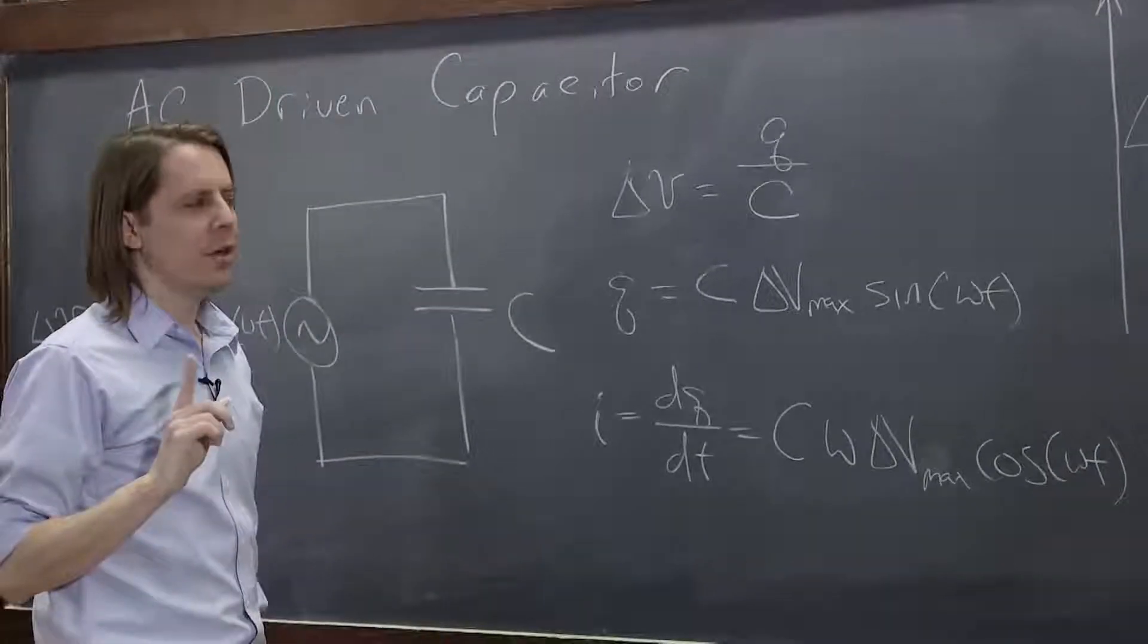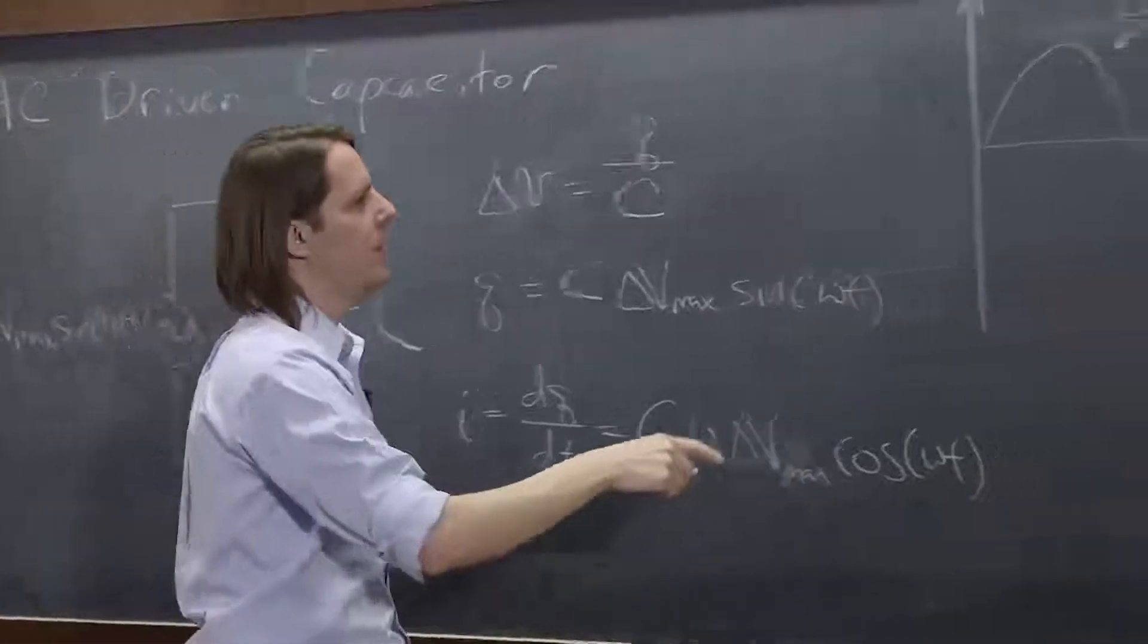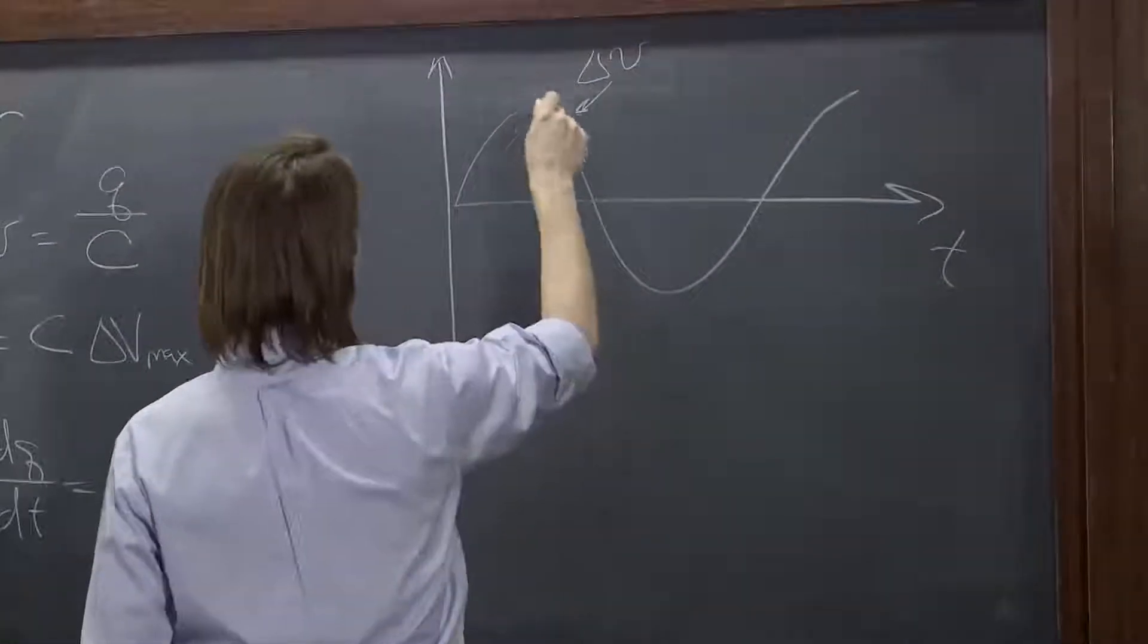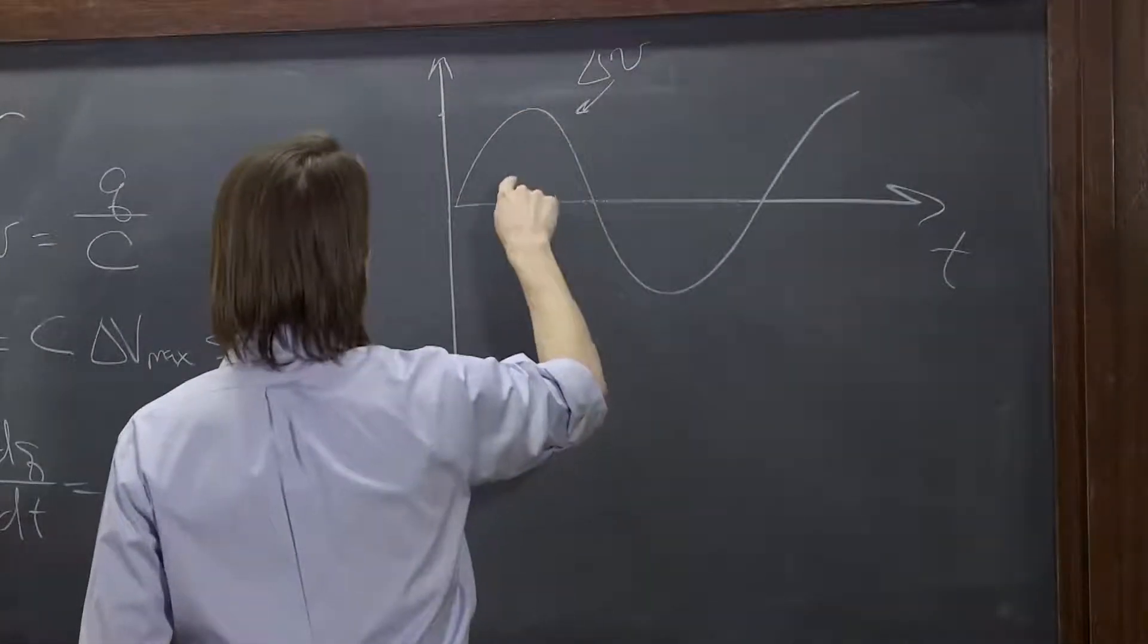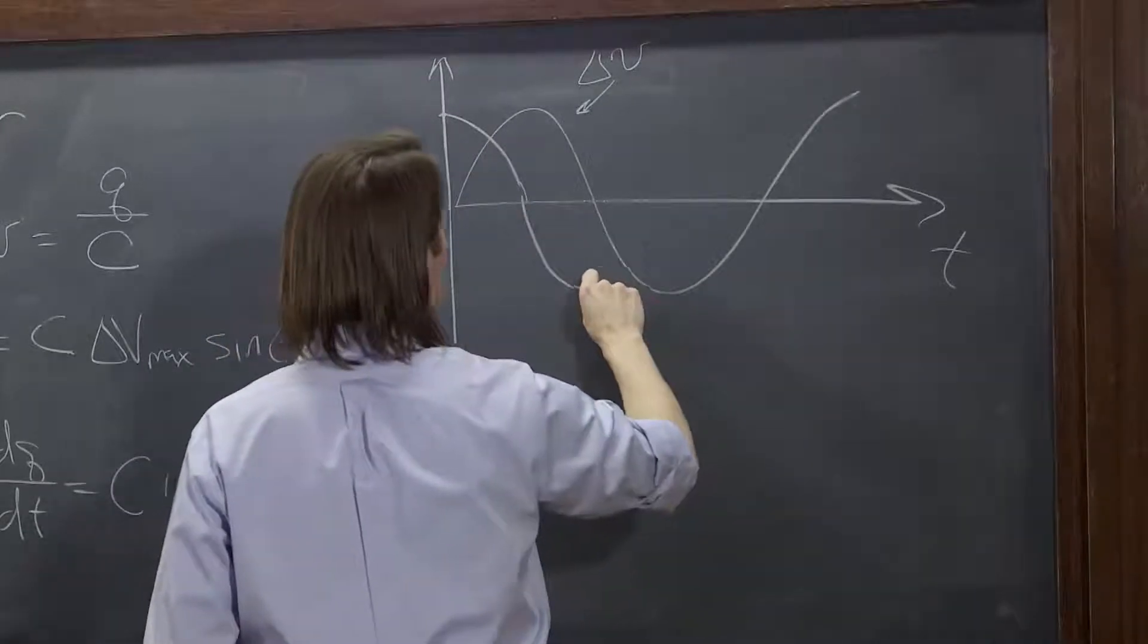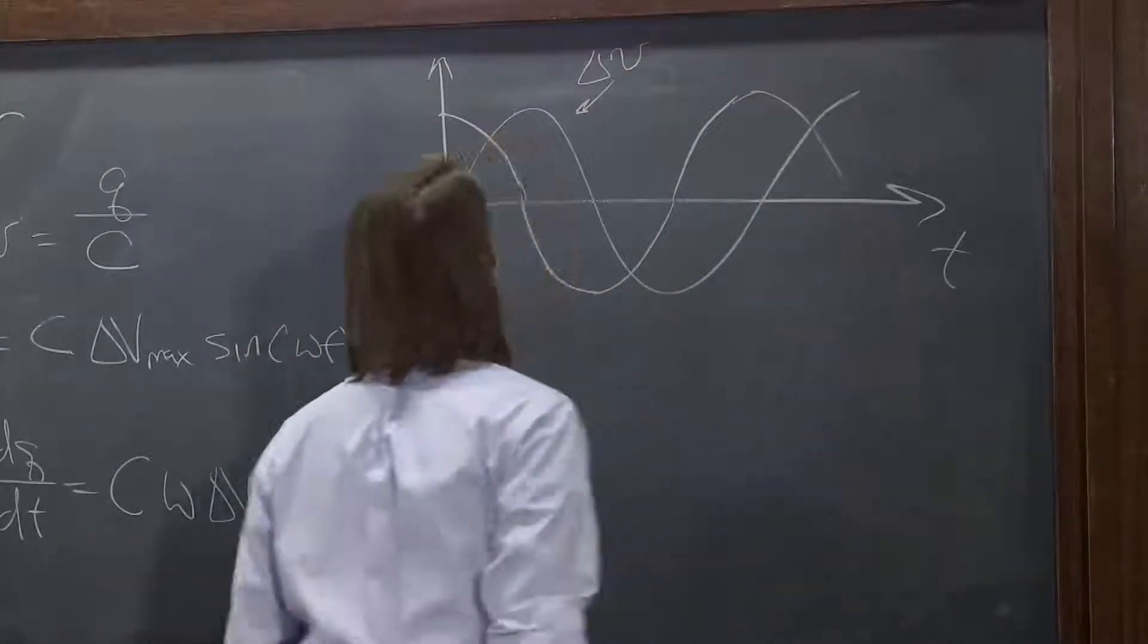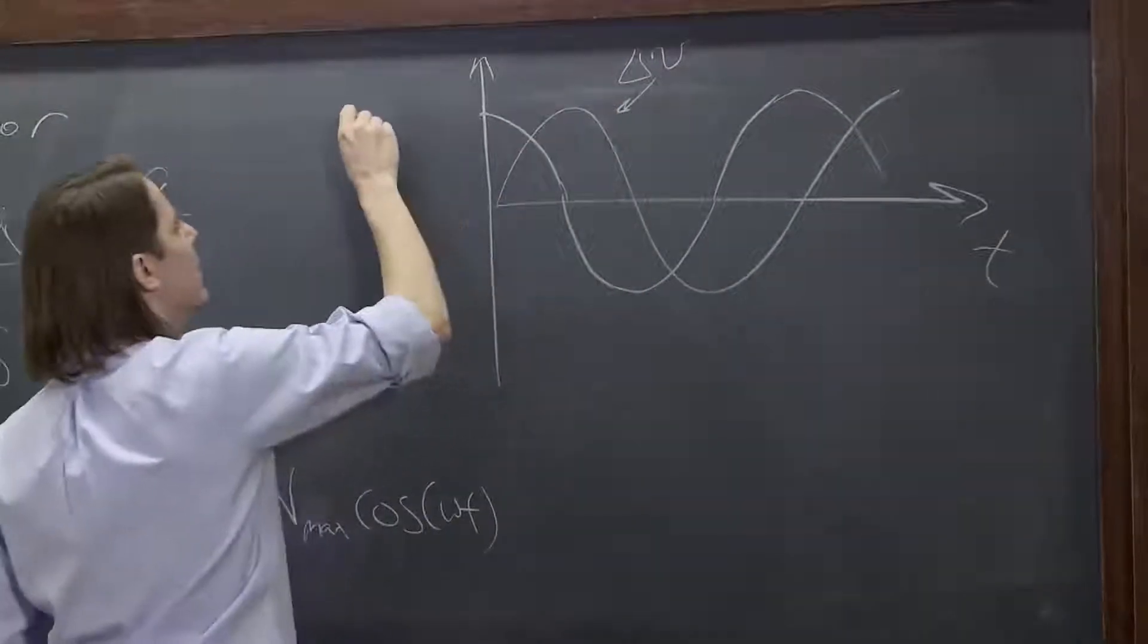And then the current we derived is a cosine, so we know it starts high and goes low. So it's going to start up here, and it's going to hit zero when that is a maximum, and a minimum when that is zero, and zero when that's there, and this when it's there like that, where this is I.